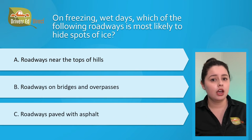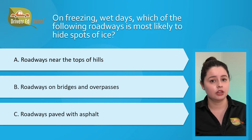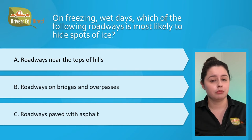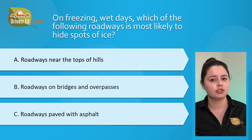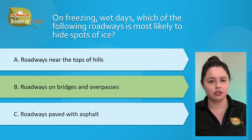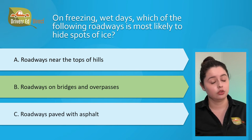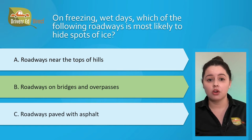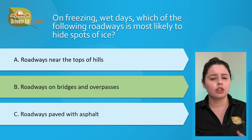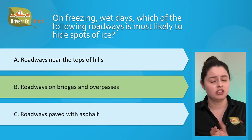Question number three: on freezing wet days, which of the following roadways is most likely to hide spots of ice? A) roadways near the tops of hills, B) roadways on bridges and overpasses, or C) roadways paved with asphalt. The correct answer is B, roadways on bridges and overpasses. Some road surfaces are a lot more slippery than others when wet and freezing, and bridges and overpasses tend to freeze before the rest of the road, so they can have hidden spots of ice to keep an eye out for.